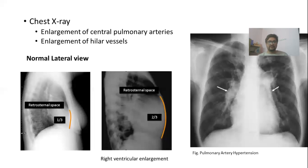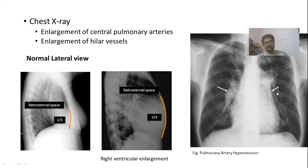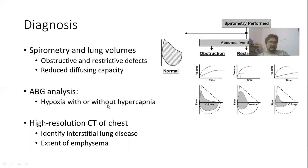On chest X-ray, we can look for enlargement of the pulmonary arteries and hilar vessels, and on the lateral X-ray we can see decreased retrosternal space due to enlargement of the right ventricle. Spirometry and lung volume analysis can also help identify the cause. Spirometry may show an obstructive or restrictive type of defect, helping to identify the underlying cause, and we can also identify reduced diffusing capacity using spirometry and lung volume studies.